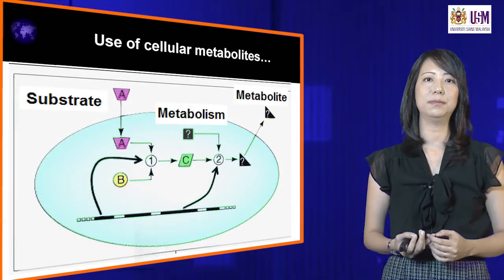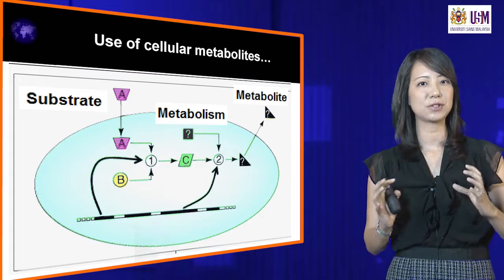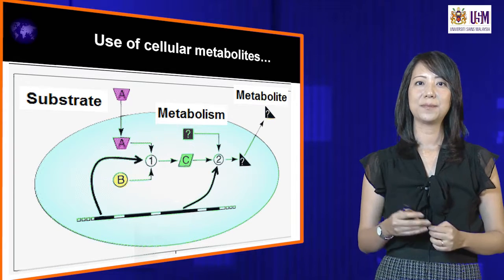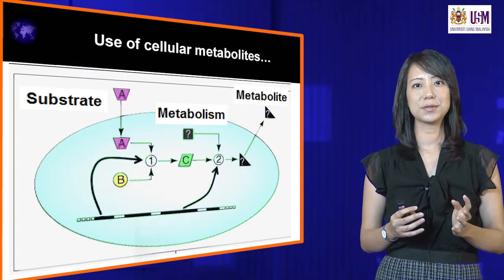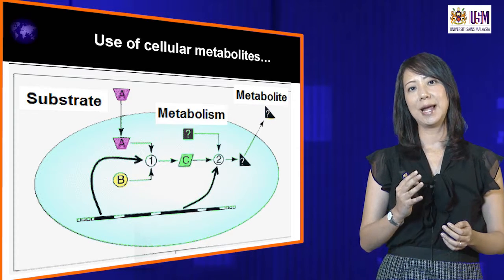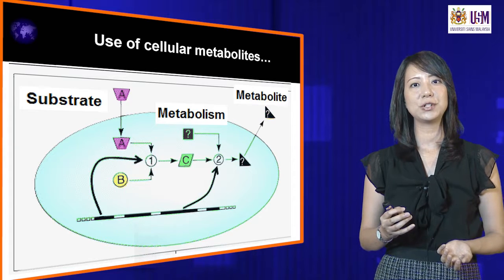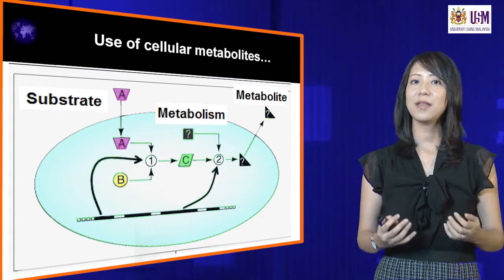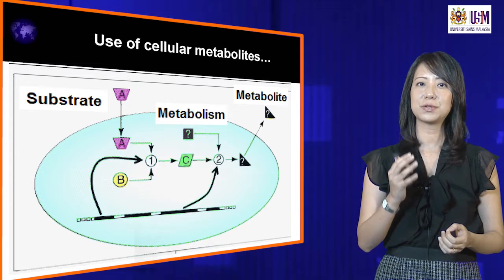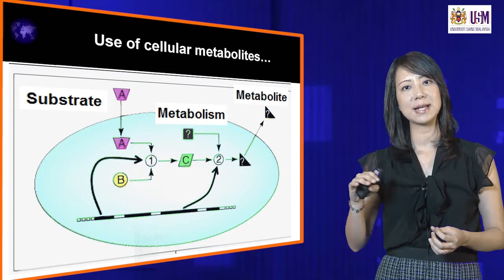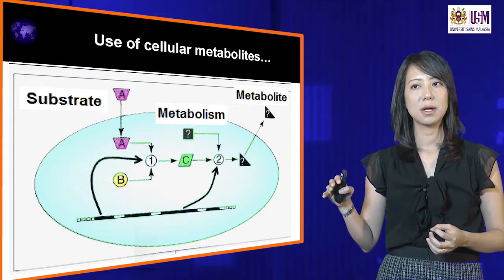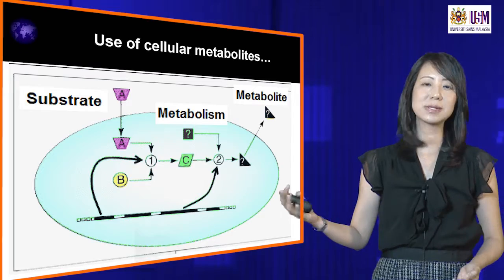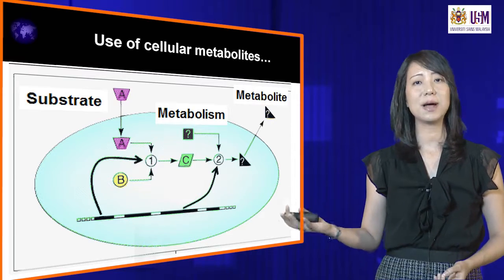Looking at this diagram, there is a cell structure. The substrate — what we call A — will be the food for the cells. The substrate enters the cells, is used for energy production and cell replication, but all these substrates must also go through the entire metabolism process. At the end, they are excreted out of the cells — disposed of in terms of metabolites.